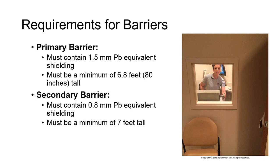Primary barriers must contain shielding effectiveness equivalent to 1.5 mm of pure lead, and must be a minimum of 6.8 feet or 80 inches in height. Secondary barriers must contain shielding effectiveness equivalent to 0.8 mm of pure lead, and must be a minimum of 7 feet in height.